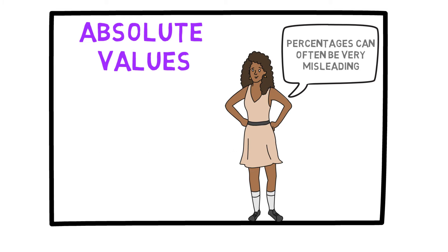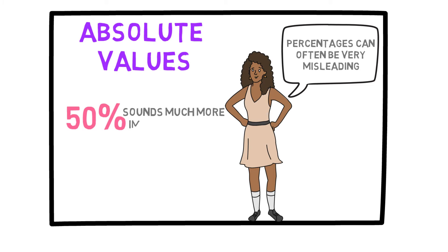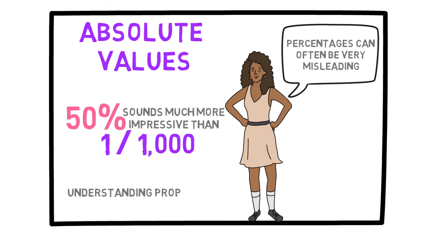So, why do they report things like this? The answer is that if you write an article and say it decreases your chances of getting this disease by 1 out of 1,000, nobody will read that article because it does not sound very important or impressive. When we are careful and understand how to read these probabilities, then we can understand what they actually mean.